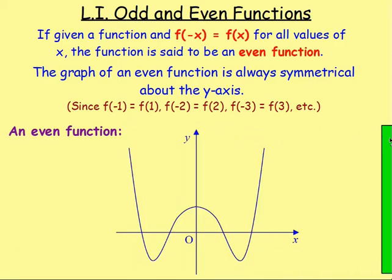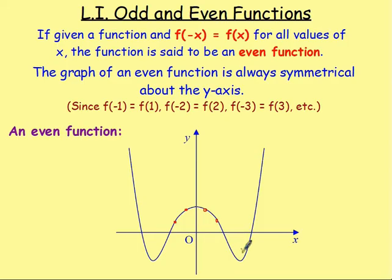If you have an even function, then that will be symmetrical about the y-axis. The reason for that is that f of negative 1 will be the exact same as f of 1, f of negative 2 will be the exact same as f of 2, and so on. So really an even function would look like that — you can see that when x is 1 you've got a point, and at negative 1 you've got a point that is just symmetrical to that. It will be symmetrical about the y-axis, and that's what you get if you have an even function.